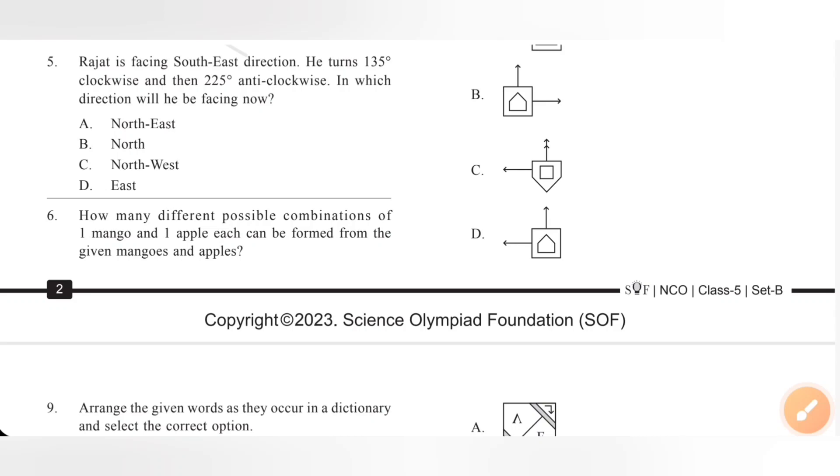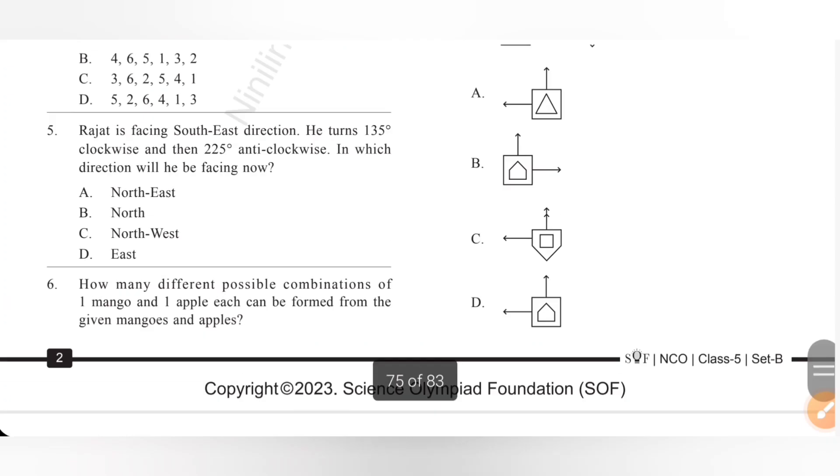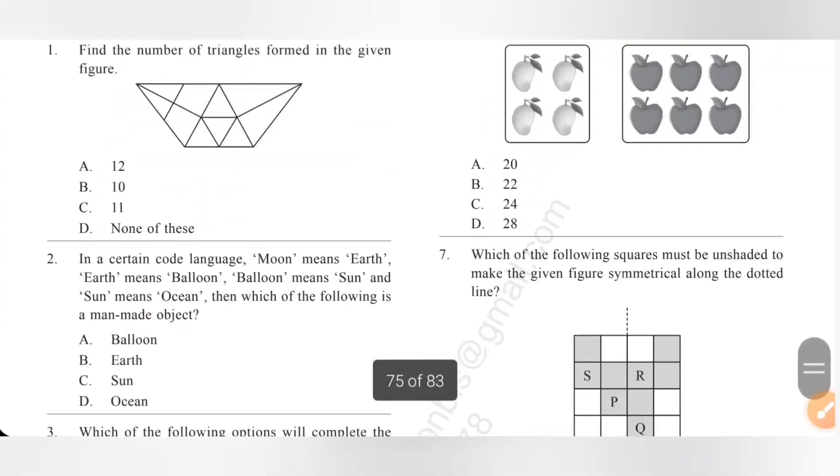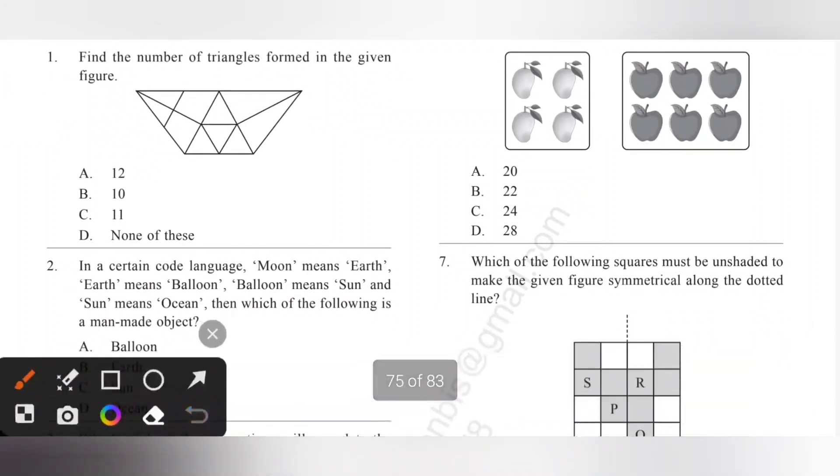Sixth one, how many different possible combinations of 1 mango and 1 apple? The given mangoes are 4 and apples 6, so 6 into 4 is 24. Option C is the correct answer.